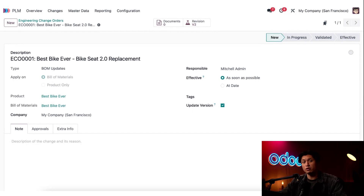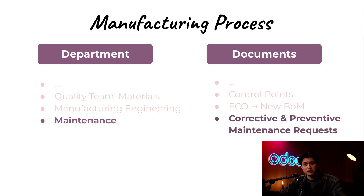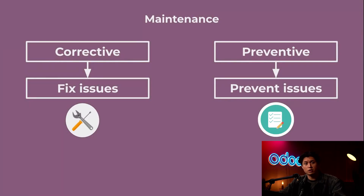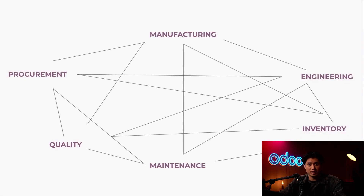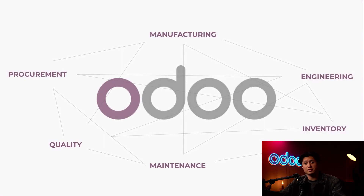Finally, we use the maintenance app to schedule preventative tasks and log corrective repairs on equipment — whether it's a routine belt check or a surprise motor swap. By staying ahead of breakdowns, production lines keep running and delivery promises stay intact.